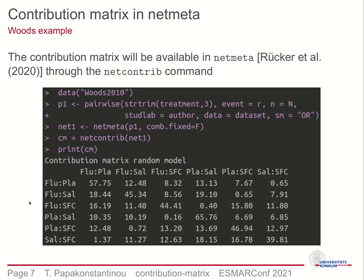Through the collaboration with the Institute of Medical Biometry and Statistics of the University of Freiburg, the contribution matrix will be included in an upcoming version of netmeta. This will be as simple as calling the netcontrib function on the netmeta object, as you can see in the Guido dataset example here. Each row of the matrix is a network comparison and each column is a direct comparison.